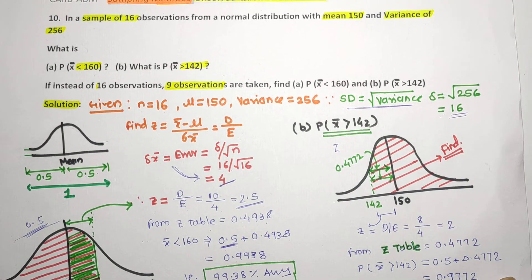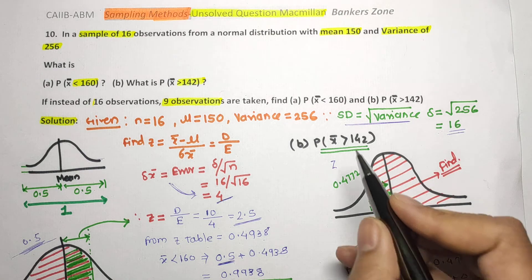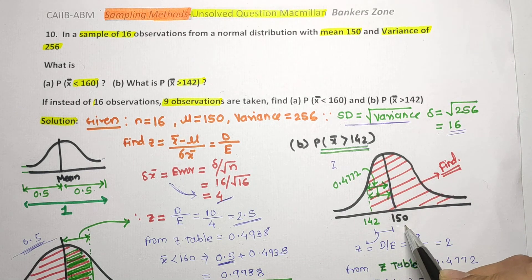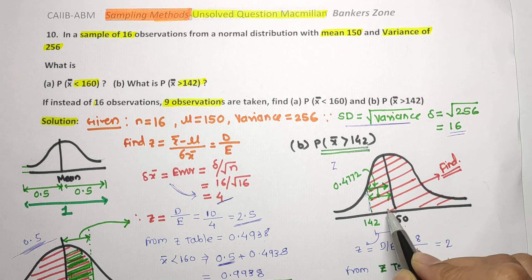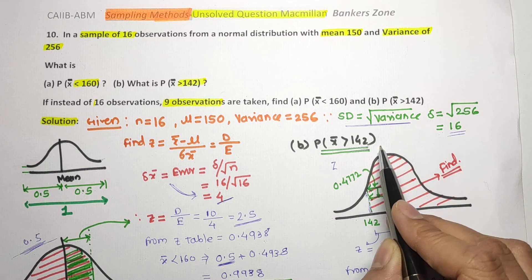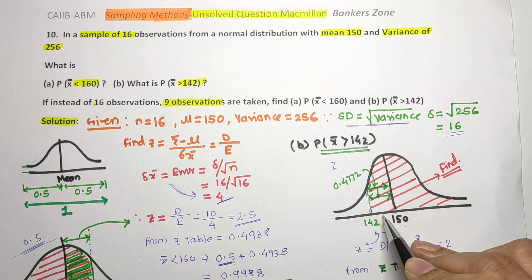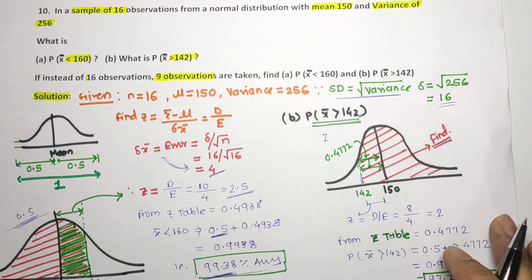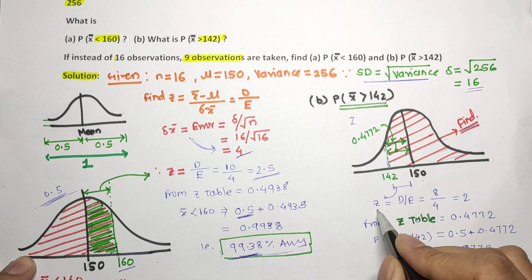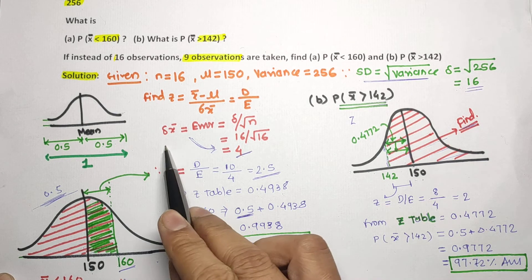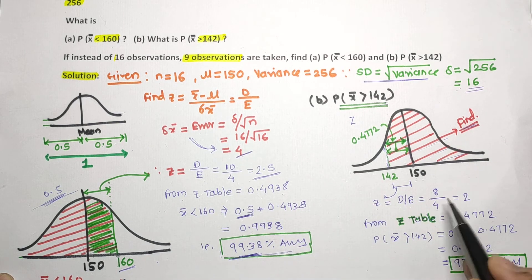Now for part B: what is the probability that the sample mean is greater than 142? Since 142 is less than the mean of 150, it lies on the left-hand side. We place the 142 line to the left of 150. Greater than 142 means the right side, so the red marked area to the right of 142 is what we need to find.